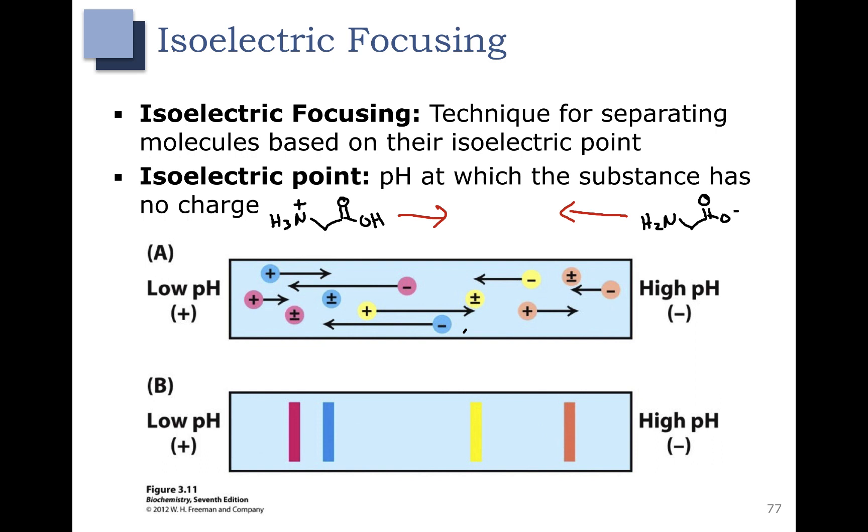And that is the isoelectric point. For our amino acid that means it's going to have both a positive and negative charge.